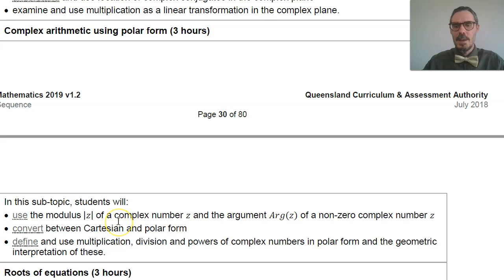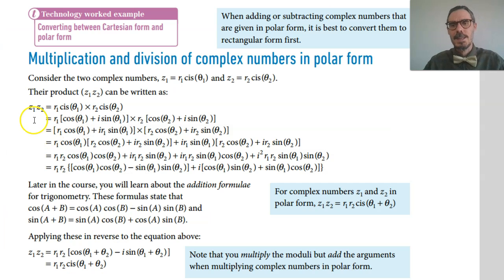But let me quickly walk you through, show you what the textbook has here. Suppose I have two complex numbers written in polar form and it's important. R1, cis theta1 and R2, cis theta2.